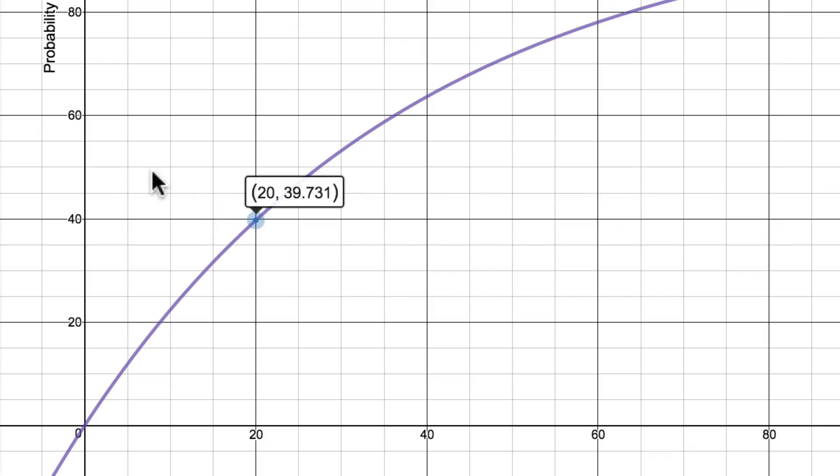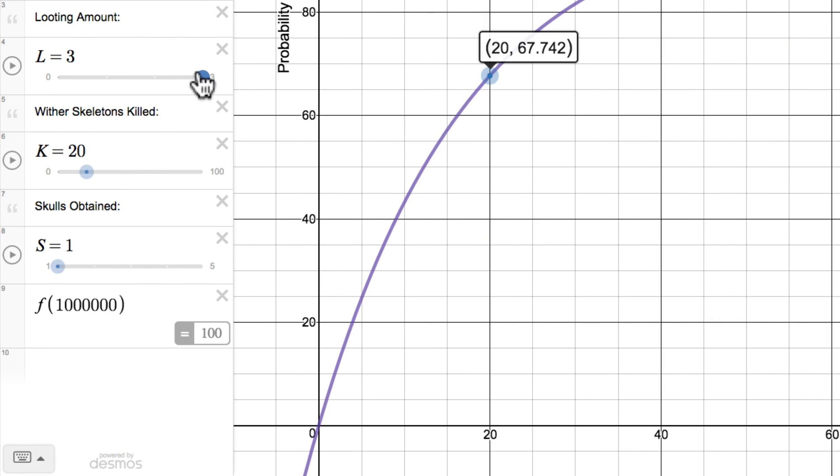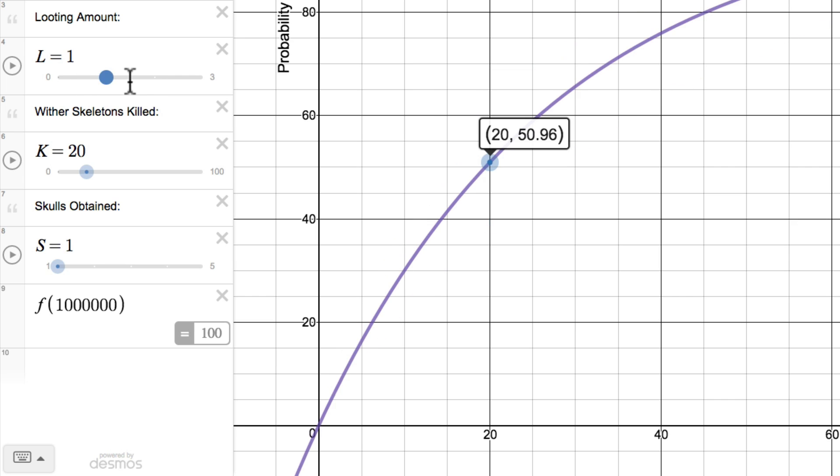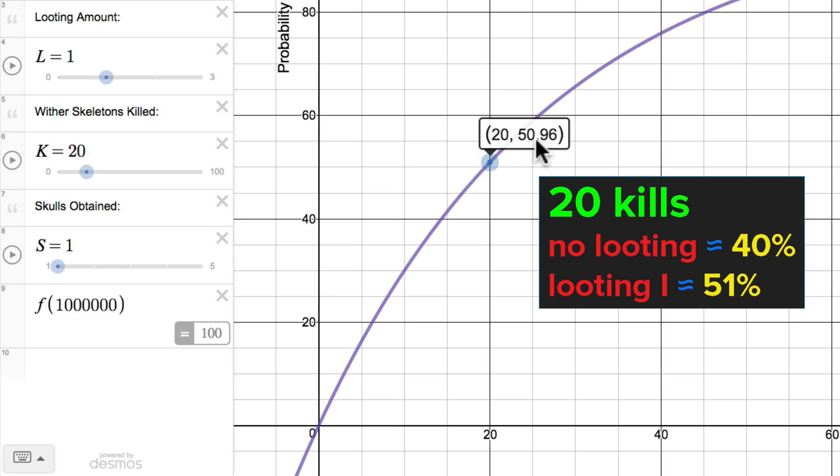But what if I have looting? Good question. I included a slider over here that you can drag and it will change the graph depending on how much looting you have. So if we have looting 1 and we kill 20 Skeletons, there is about a 50% chance that we will have a skull by then.